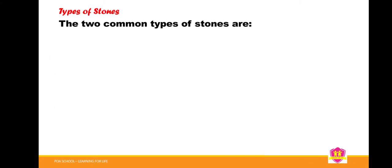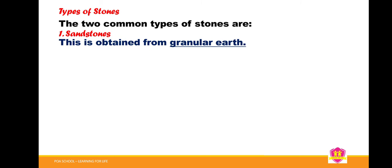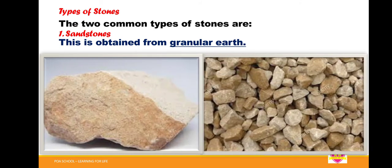We now move on to the various types of stones. The two common types are: one, sandstone. Sandstone is mostly obtained from granular earth — found under the soil. Sometimes when digging the ground, you will encounter stones underground. When collected and gathered, you can break them into pieces suitable for building and construction. The footage shown is a typical example of sandstone.